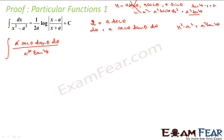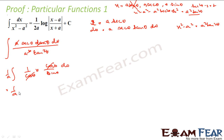After cancellations — a cancels, tan θ with tan²θ leaves one tan θ — this becomes the integral of sec θ / tan θ. Since tan θ = sin θ / cos θ, this simplifies to (1/a) ∫cos θ dθ.